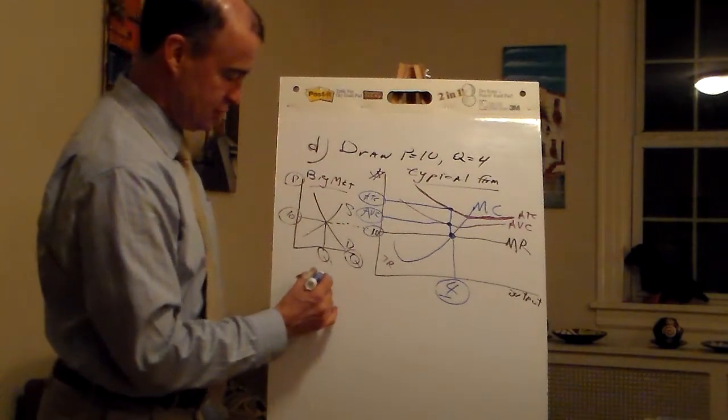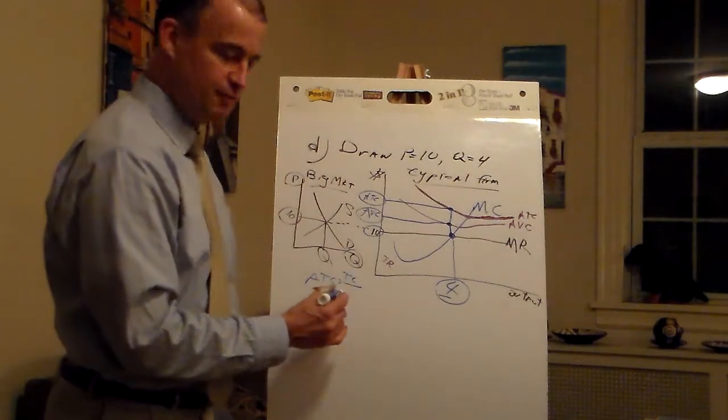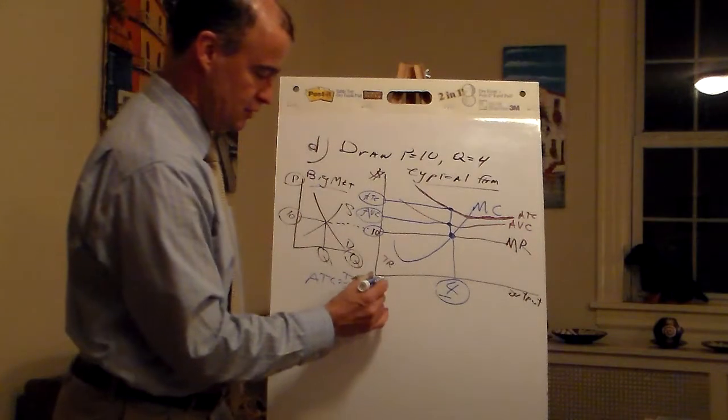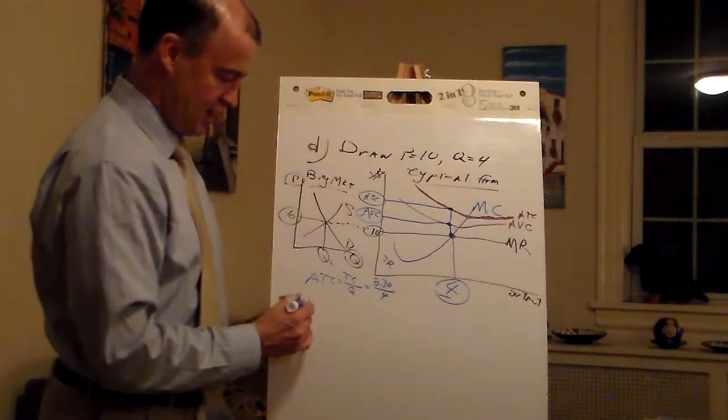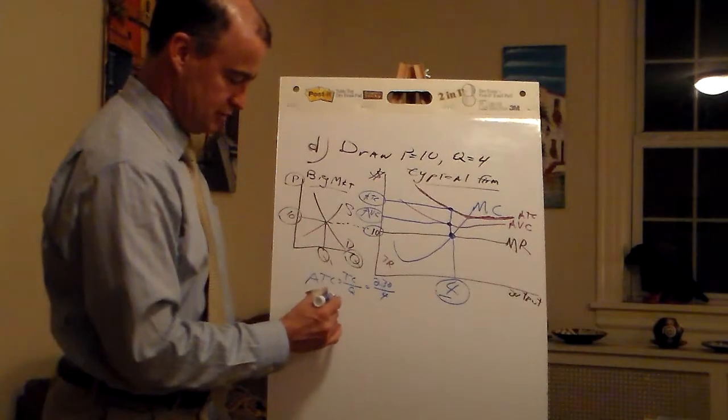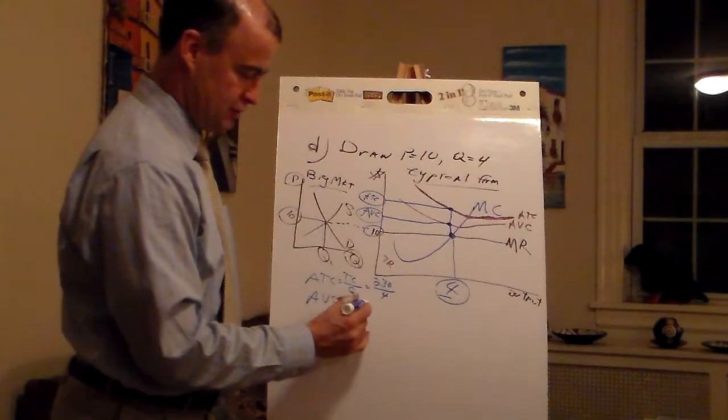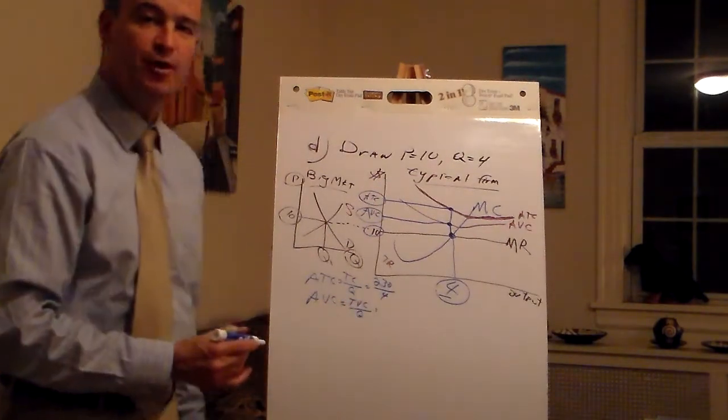Average total cost. What's the formula? Total cost divided by output. So, 230 divided by 4. Average variable cost. Total variable cost divided by output.